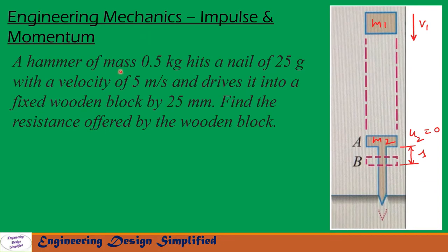Today's problem is: a hammer of mass 0.5 kg hits a nail of 25 grams with a velocity of 5 meters per second and drives it into a fixed wooden block by 25 millimeter. Find the resistance offered by the wooden block.